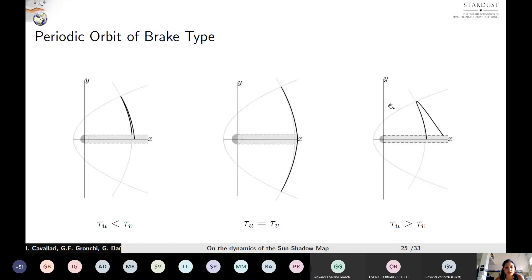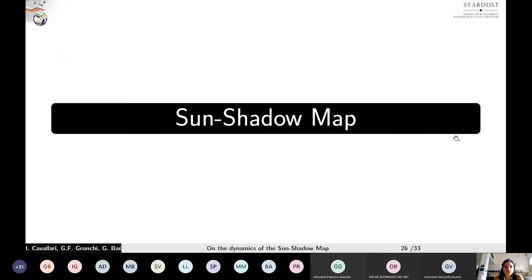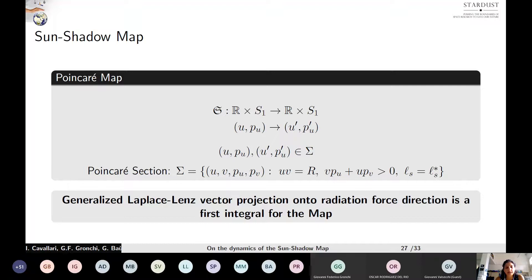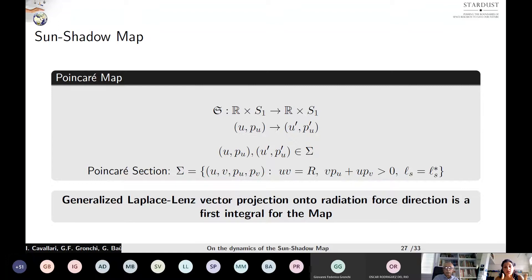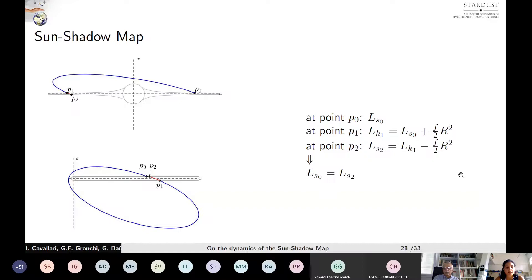In this slide we show the periodic orbit and two close trajectories for which tau_U differs from tau_V. Now, before concluding, I would like to introduce the sun-shadow map, which is used to analyze the dynamical behavior of the sun-shadow system. It is a Poincaré return map obtained by intersecting the trajectories with a phase space section that, in the Cartesian plane, corresponds to the upper boundary of the shadow region considering the motion direction out of the shadow. To define this map, we have not fixed the energy — since it is not a constant — but we have fixed the value of LS. Even though this quantity is not a constant for the flow, it is a constant for the map.